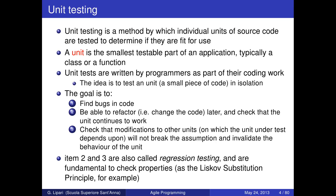One goal is to find bugs. Another goal is to guarantee that later on, if you change something in the function, the function continues to work. For example, when writing a function for intersecting two sets, you write tests to check that given two sets, the result is actually their intersection — the common elements to both sets.